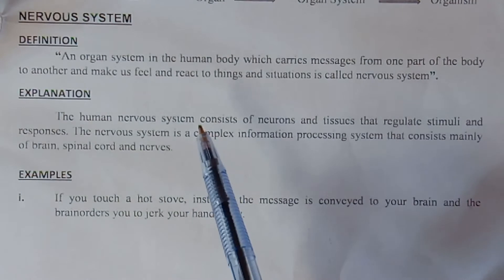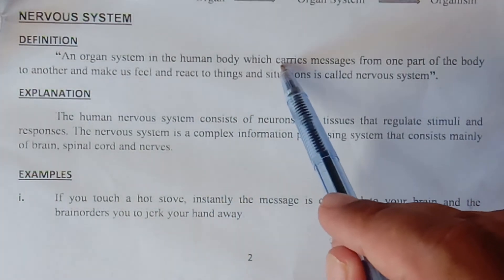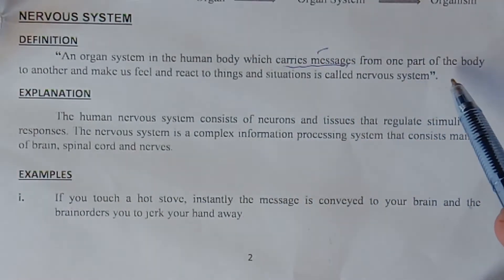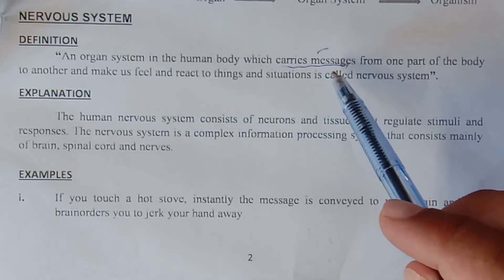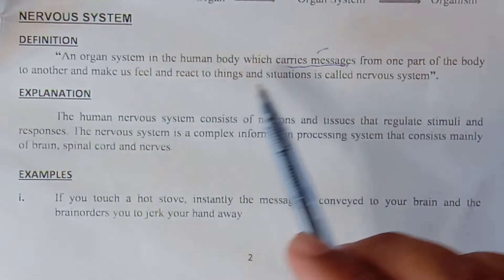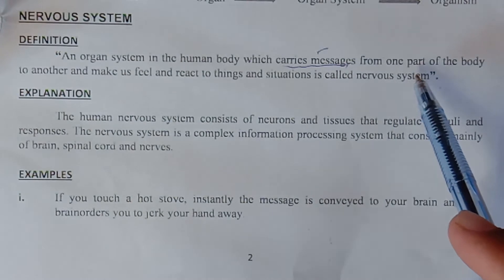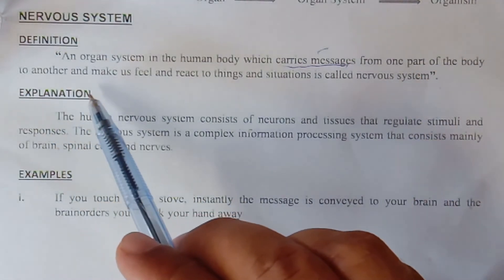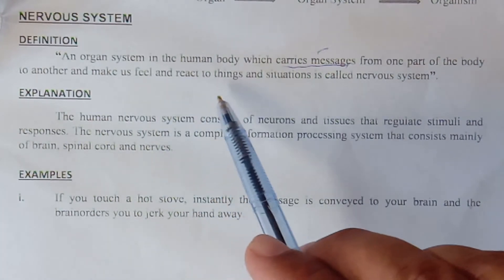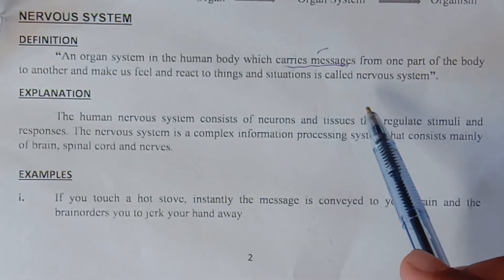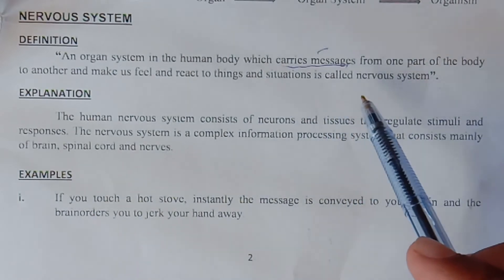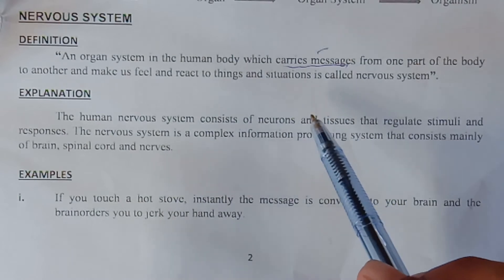The definition means that the nervous system is responsible for carrying messages — which means sensation and feelings — and changes in the environment from one part of the body to another. The receptors send messages to the brain, and then we feel and react to the changes. Such a system is called the nervous system.